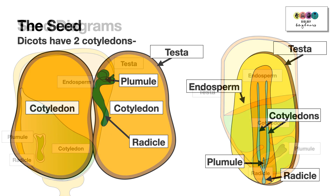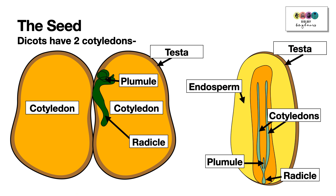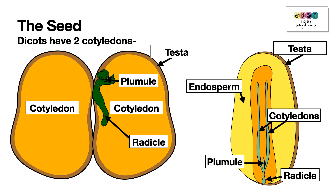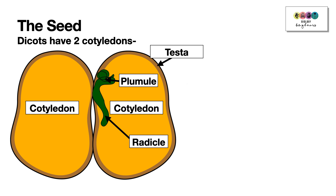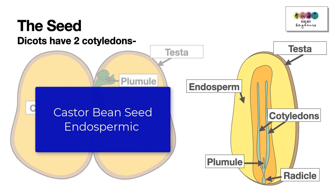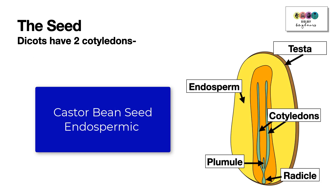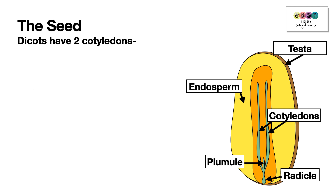With dicot seeds you're looking for all the same labels — the only difference is the two cotyledons, as dicots always have two. Dicot seeds are mostly non-endospermic and do not have an endosperm at maturity, for example the broad bean. However there are exceptions — for example the castor bean seed does have an endosperm at maturity.